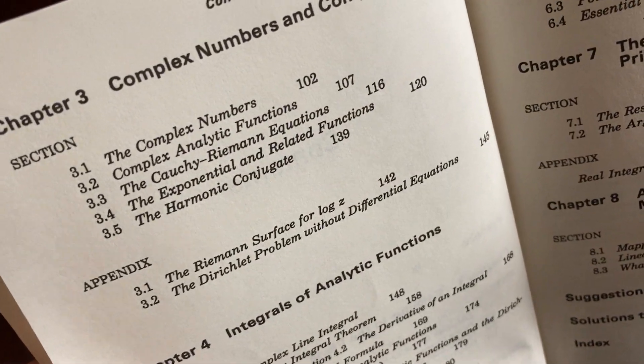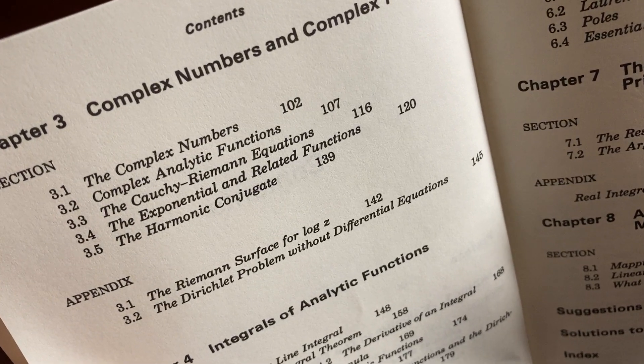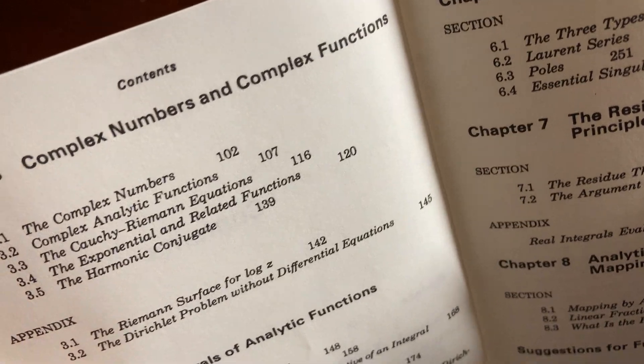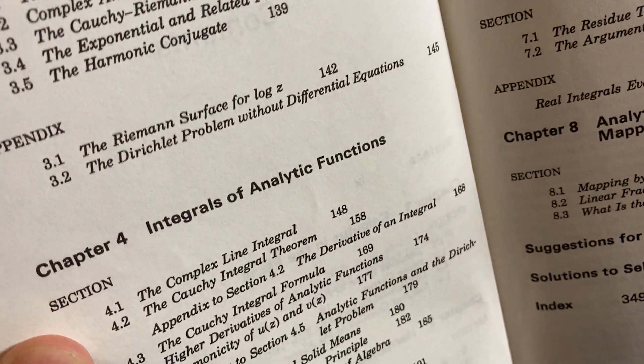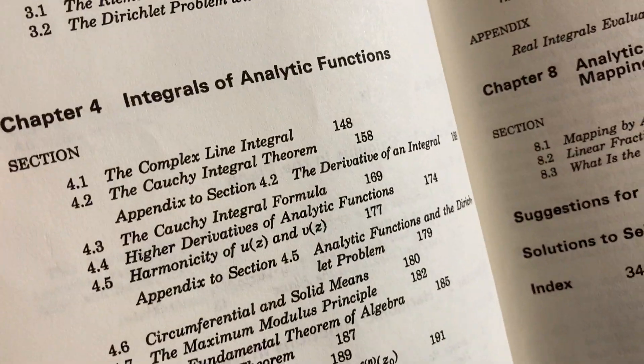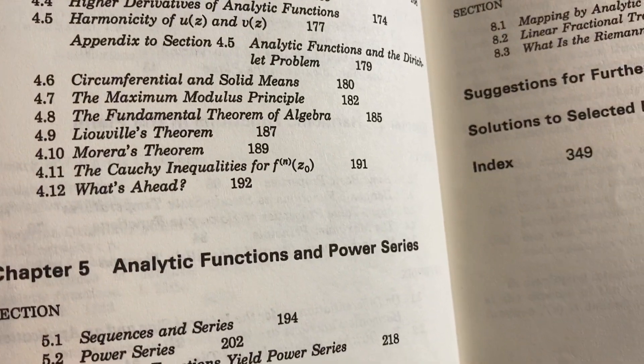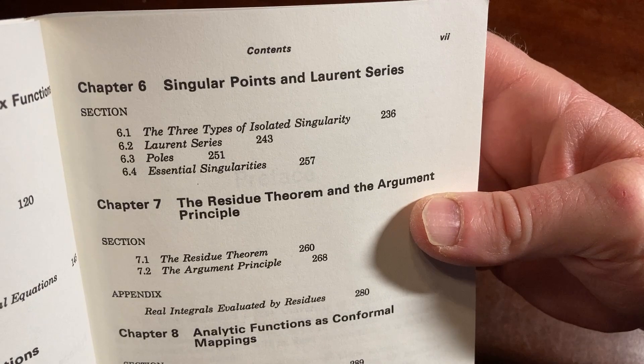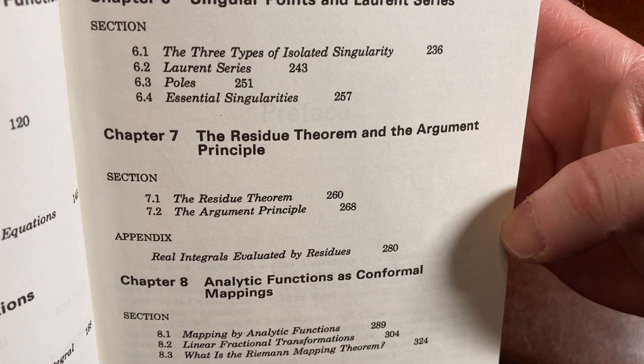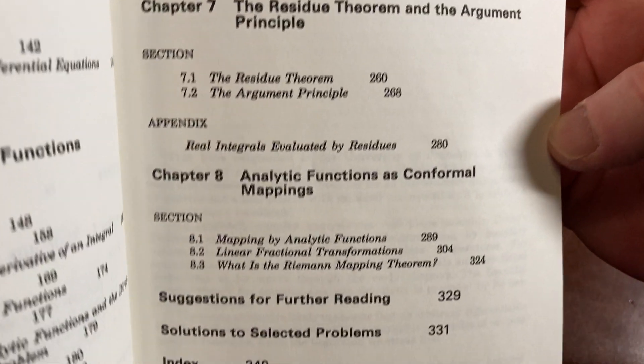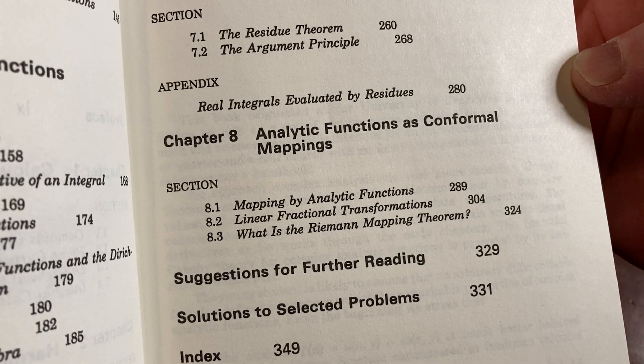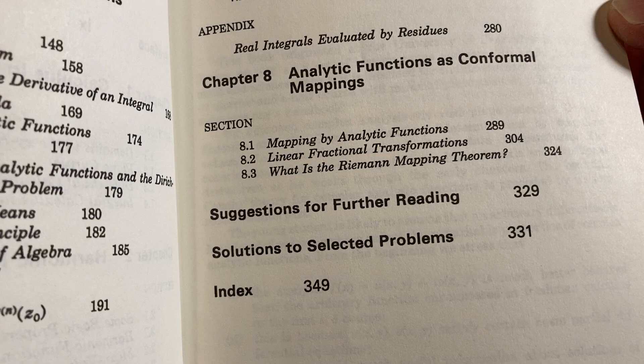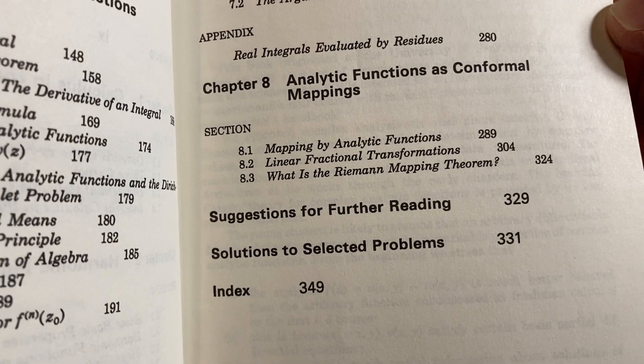Harmonic Functions in the Plane. Some Basic Properties. Harmonic Functions as Steady-State Temperatures. The Mean Value Properties of Harmonic Function. The Maximum Principle. Let's turn the page. Some more stuff here. By the way, this book does have some answers, so that's pretty good. Complex Numbers and Complex Functions. Integrals of Analytic Functions. Analytic Functions and Power Series. Singular Points on Laurents. There's tons of stuff in here. The Residue Theorem and the Argument Principle. Analytic Functions as Conformal Mappings. And then you have some Suggestions for Further Reading and Solutions to Selected Problems.